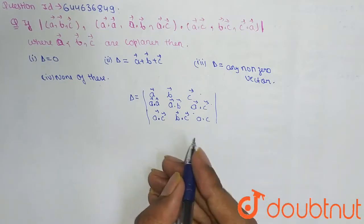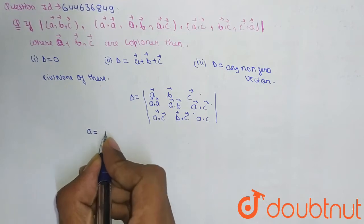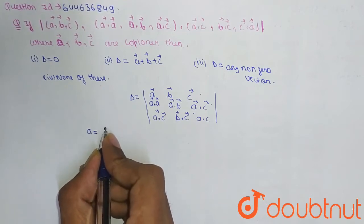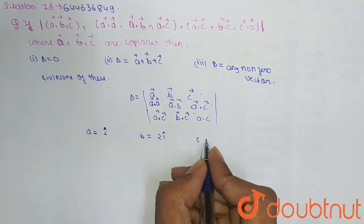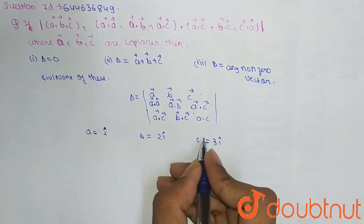So for the simplification of the question, we consider A is equal to I vector, B is equal to 2I cap, and C vector is equal to 3I cap.